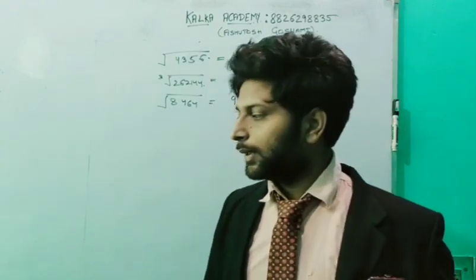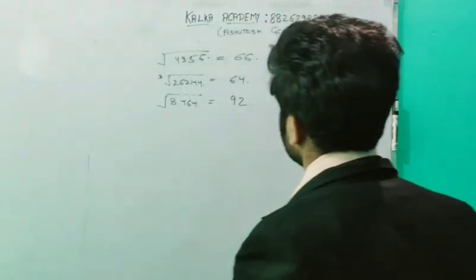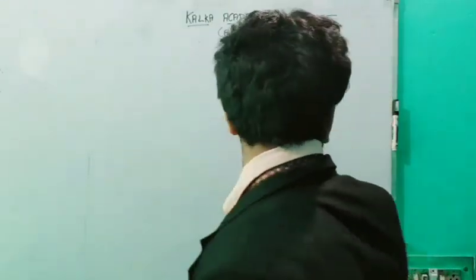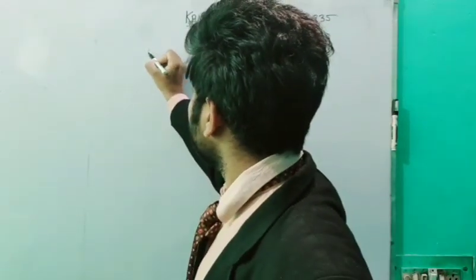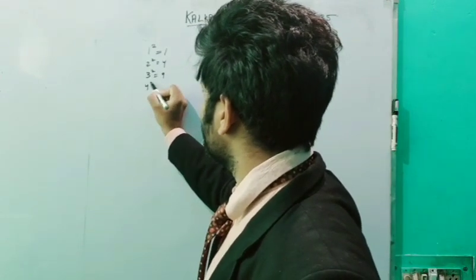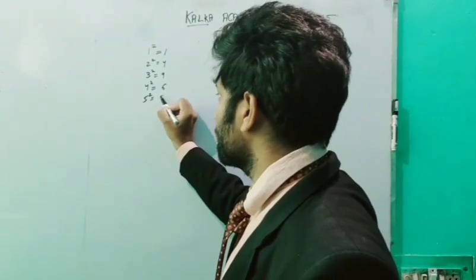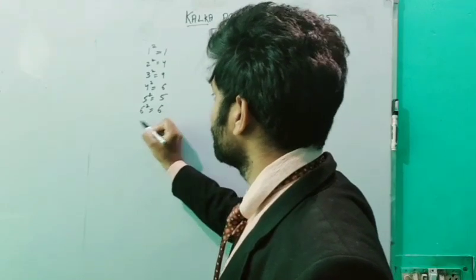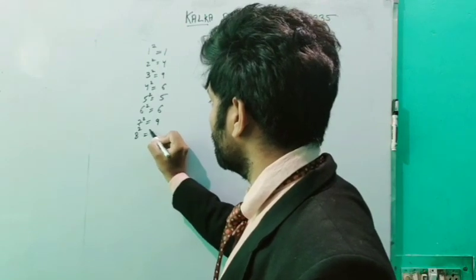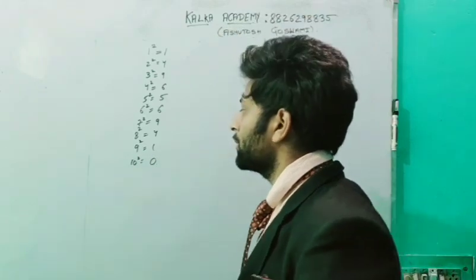Let us suppose we have: 1 square is 1, 2 square is 4, 3 square is 9, 4 square is 16. We are only looking at the last digit. Then 5 square is 25, 6 square is 36, 7 square is 49, 8 square is 64, 9 square is 81, 10 square is 100. The last digit is 0.